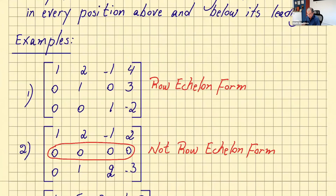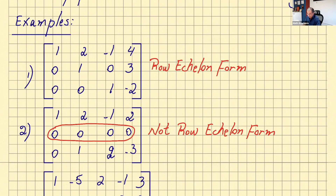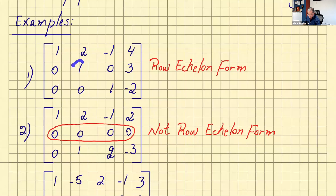Example one: we don't have a row entirely of zeros, but let's check for leading ones — condition two. Yes, we have leading ones: one, one, and one — each row starts with a one, so this is in row echelon form. Now for RREF: each leading one must have zeros in the rest of its column. Here the first column has one, zero, zero — that works. But the second leading one has a two above it, not zero, so this is not reduced row echelon form.